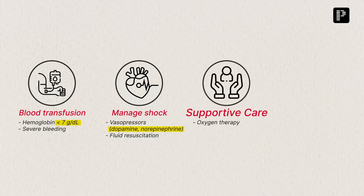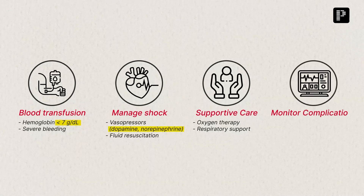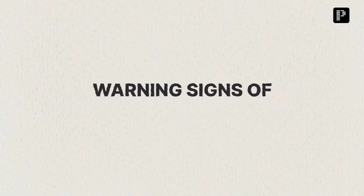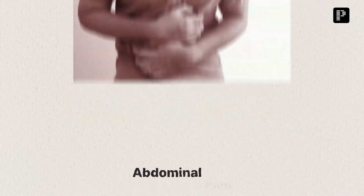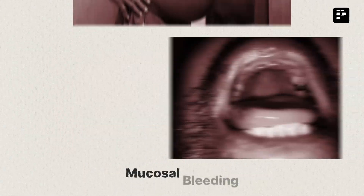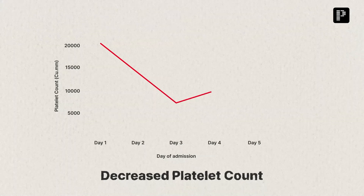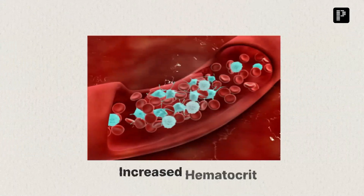Provide supportive care including oxygen therapy and respiratory support if needed. Constantly monitor for complications such as hemorrhage and organ impairment. It is essential to monitor patients for warning signs, as these indicate the need for immediate medical intervention. Warning signs include severe abdominal pain, persistent vomiting, fluid accumulation, mucosal bleeding, lethargy or confusion, decreased platelet count, hepatomegaly, and increased hematocrit.